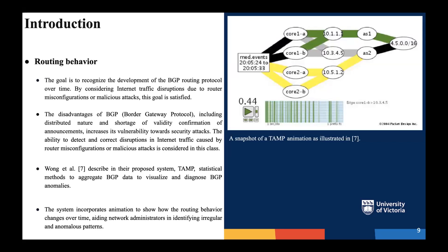Another family is the routing behavior. It's focusing on the BGP routing protocol, or the border gateway protocol, and considers internet traffic disruptions due to router misconfigurations or malicious attacks. The BGP has many disadvantages including its distributed nature and shortage of validity confirmation of announcements, which increases its vulnerability towards security attacks. The ability to detect and correct disruptions in internet traffic caused by router misconfigurations or malicious attacks is what is considered in this algorithm. The system incorporates animation to show how routing behavior changes over time to help network administrators identify anomalies in the network.